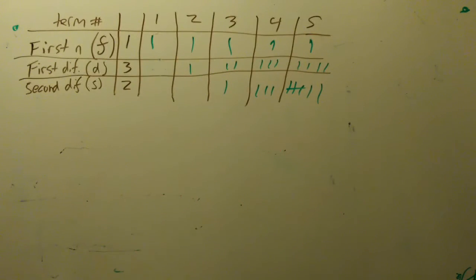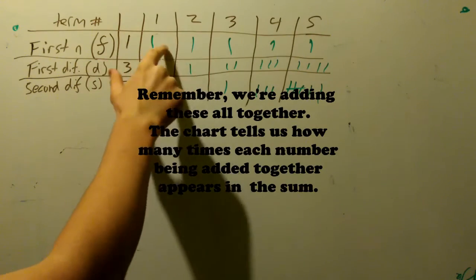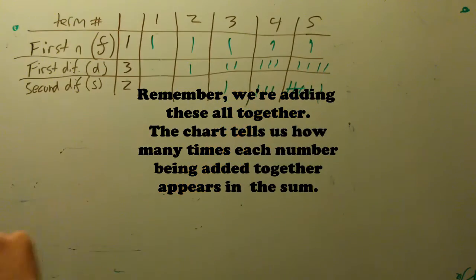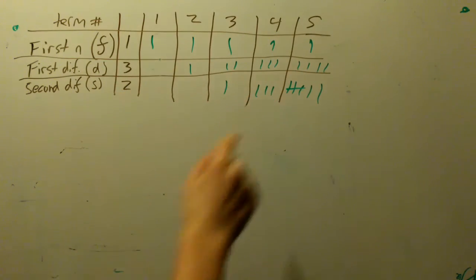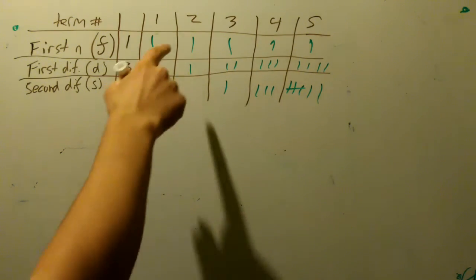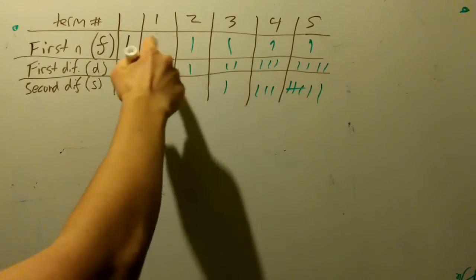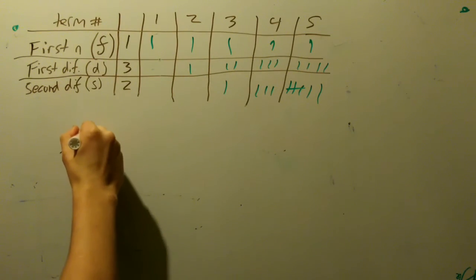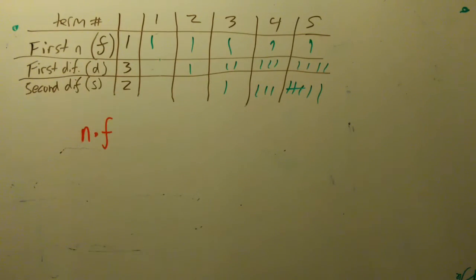Okay, so now how are we going to find the sum of this? Well, it seems easy because we're going to multiply 1 by 1, 2, 3, 4, 5, and multiply 3 by 1, 3, 6, 10, and multiply 2 by 1, 4, 10. But we're looking to write this in terms of an equation. So if we can see that in the second term, there are 2 ones. In the third term, there are 3 ones. In the fourth term, 4 ones. In the fifth term, 5 ones. So this is just going to be n times f.